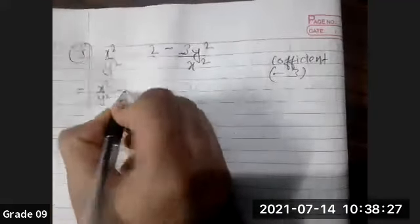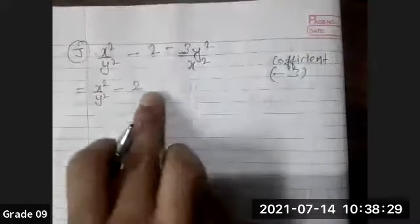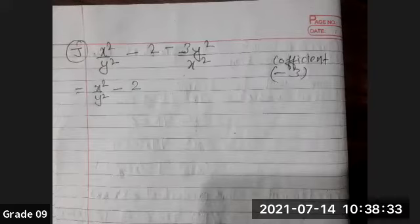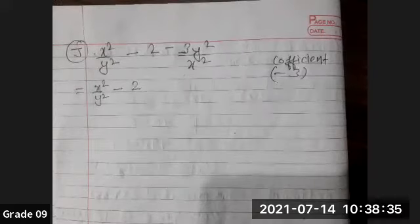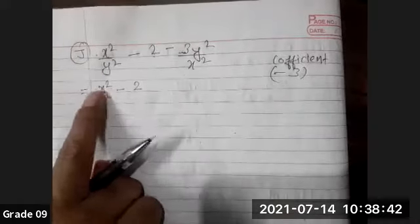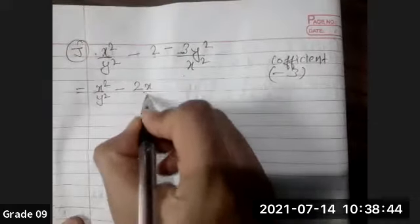The middle term normally has some alphabet in every question, but here that alphabet is missing. That's why people might think this question is a mistake, but it's not. What we can do is from this first part bring x/y in.